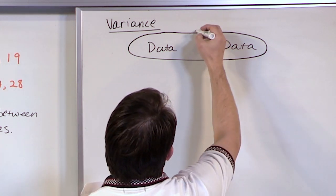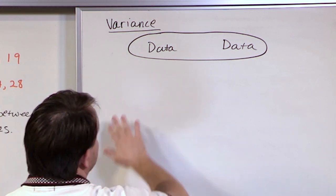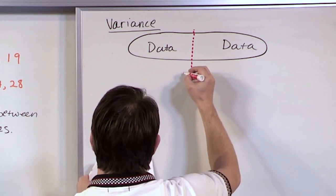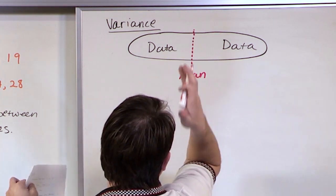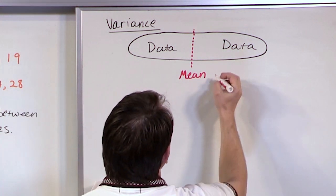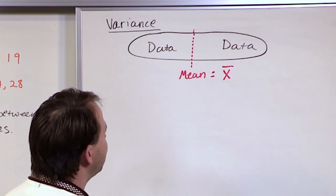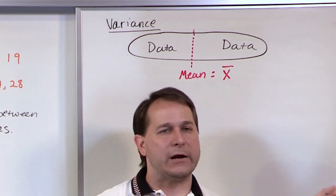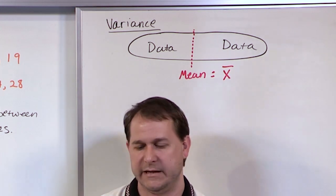We've learned in this course that when you have a bunch of data, we can calculate the mean. The mean is kind of like the middle-of-the-road value — the center of gravity of the data set. We use the X bar notation when we're talking about sample data. You add all the values up and divide by the number of samples.